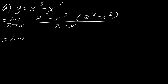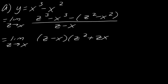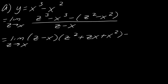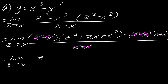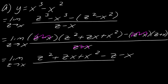Pause the video if you need to look up those formulas. The first part factors as (z minus x)(z squared plus zx plus x squared). The second part factors as (z minus x)(z plus x). All of this is divided by (z minus x). Both terms have a (z minus x) factor, so those cancel with the denominator, and we're left with the limit as z approaches x of z squared plus zx plus x squared, minus (z plus x). The denominator has dropped out.